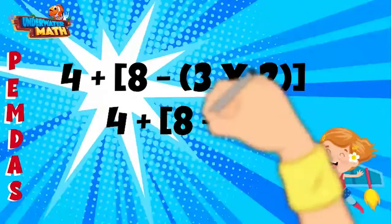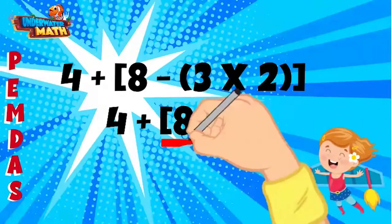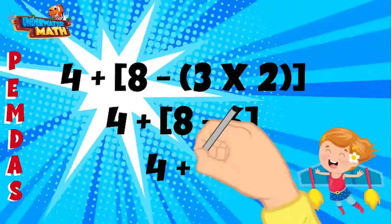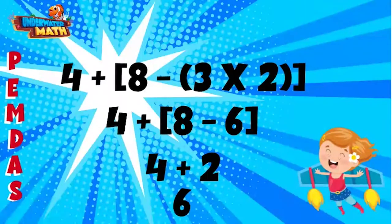We can write our next line by replacing 3 times 2 with 6. We still have a subtraction problem inside our brackets: 8 minus 6 equals 2, and we can write our next line replacing 8 minus 6 with 2. Finally our parentheses are gone and we are left with addition. 4 plus 2 is 6, so the answer to this expression is 6.